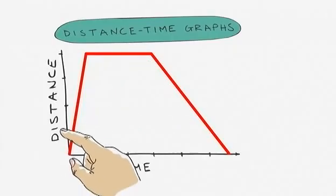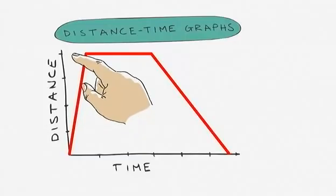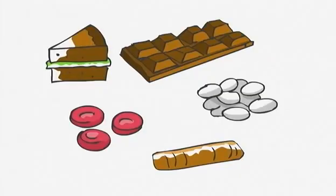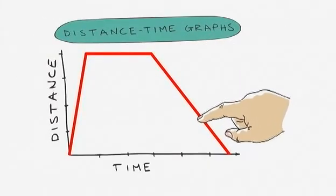If the line of the graph is sloped but straight, then the object is moving at a steady speed. I came back from my gran's less quickly than I went there. With that much cake on board, you're going nowhere fast. The line sloped more gently when I moved more slowly.